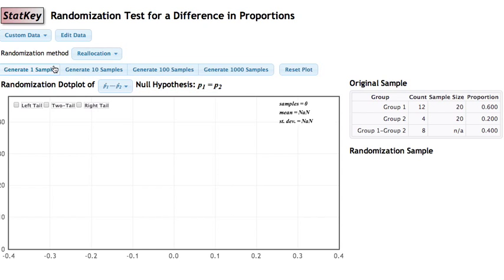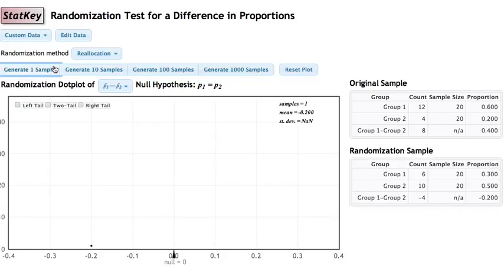Now we'll generate one sample and see what happens. In this sample, we have six individuals in the electrical stimulation group that were able to solve this problem, and ten in the other group, resulting in a difference in proportions, group 1 minus group 2, of negative 0.2, which you can see is plotted down here in the bottom left in the dot plot. We'll generate another sample so you can see the randomization sample part of this screen has now changed, reflecting a new simulation under the null hypothesis of no difference between groups, which means we're permuting those group labels like we talked about in class.